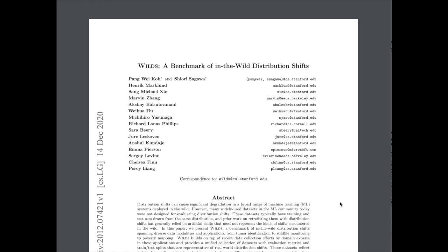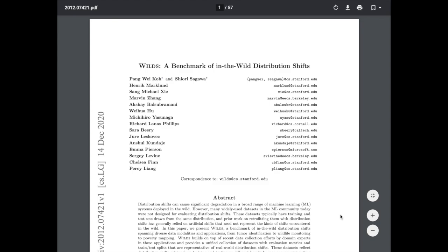The most common way to evaluate generalization is to hold out a test set, train on the training set, and report test accuracy or ROC score. But what really happens when we deploy models into the real world is some kind of data distribution shift, where test data is sampled from a different distribution than the training set. We need better benchmarks that account for this distribution shift and properly evaluate whether our model can react accordingly in the wild.